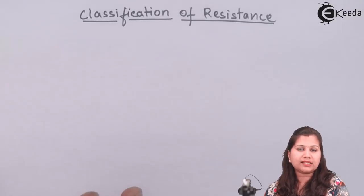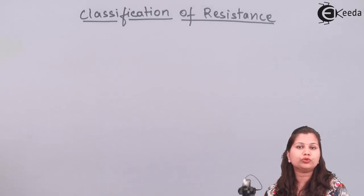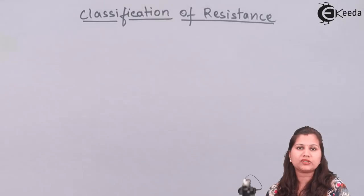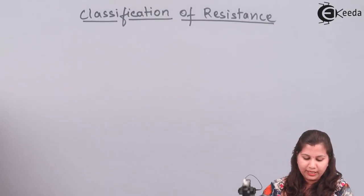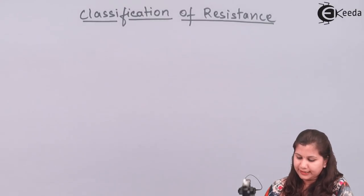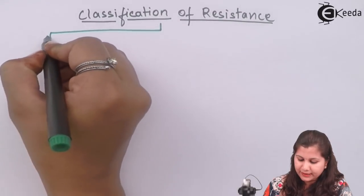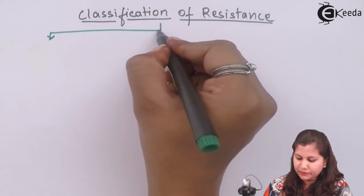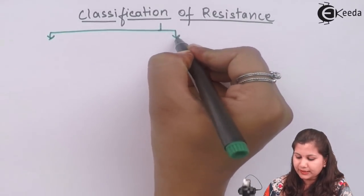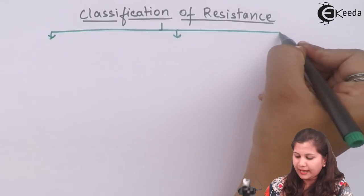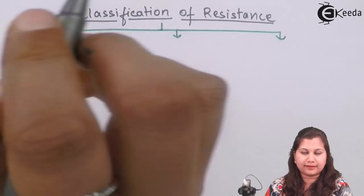Resistances can be classified into three categories on the basis of their value. This classification consists of: low resistance, medium resistance, and high resistance.